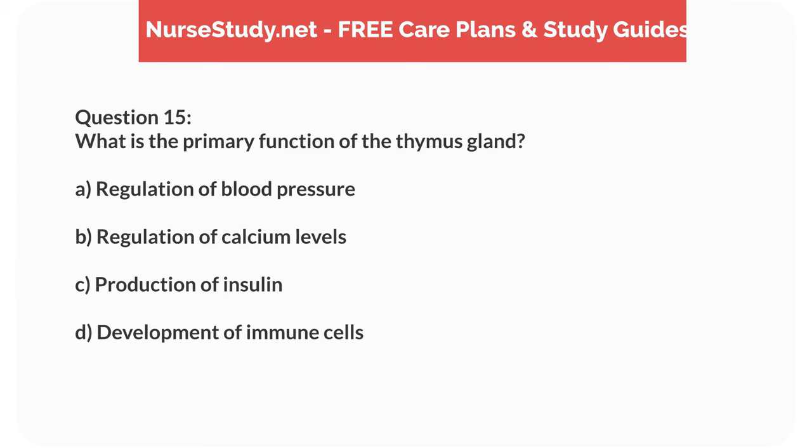Question 15. What is the primary function of the thymus gland? A. Regulation of blood pressure. B. Regulation of calcium levels. C. Production of insulin. D. Development of immune cells.